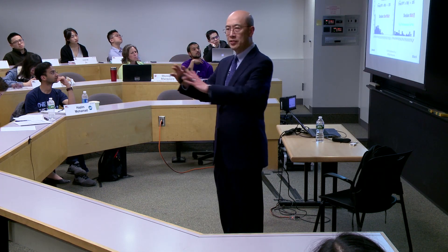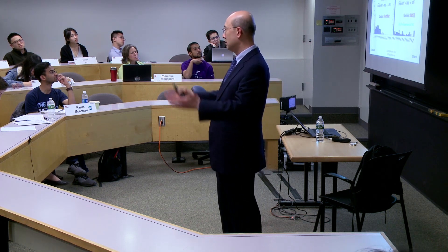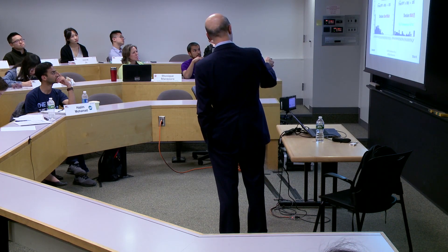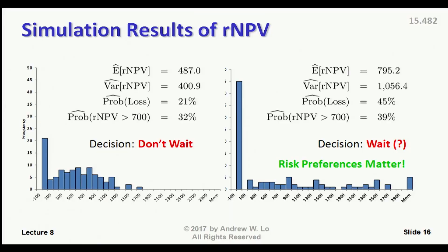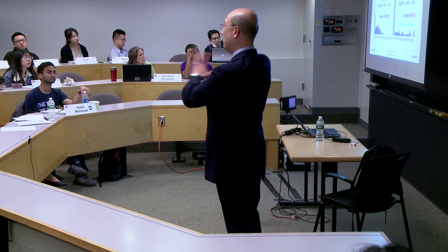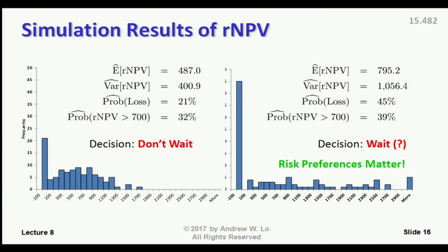If you're just using the expected risk-adjusted NPV, go for it — that's a good deal. The probability of loss: you look at all realized values of risk-adjusted NPV less than zero, and that's exactly 21%. So with this simulation, I can tell you the likelihood of losing money is 21%. On top of that, the probability of making more than $700 million is one-third — you've got a one-third chance of making more than $700 million, which is really good.